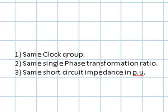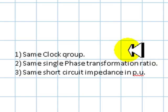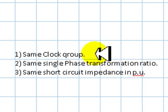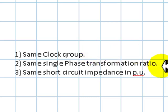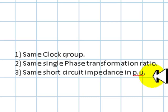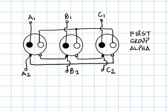To connect them in parallel, we should check that they are of the same clock group, that they have the same single-phase transformation ratio, and that they have the same per-unit short-circuit impedance. Let's begin with the clock group for the first group, Group Alpha.